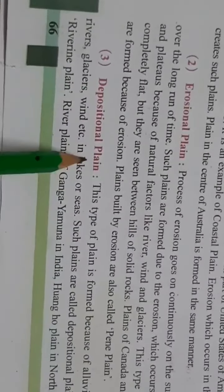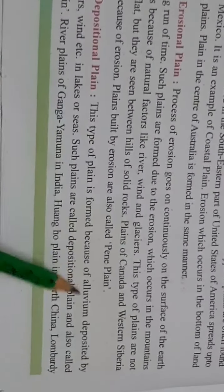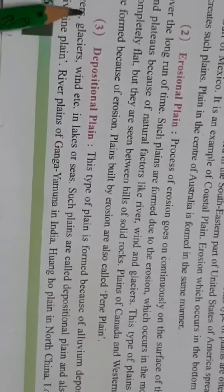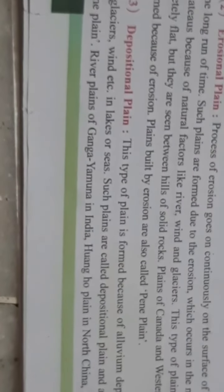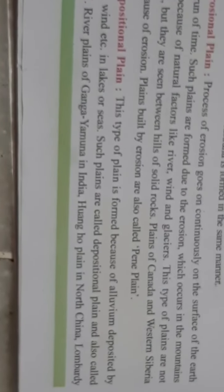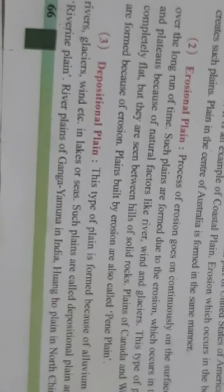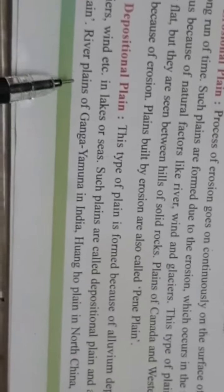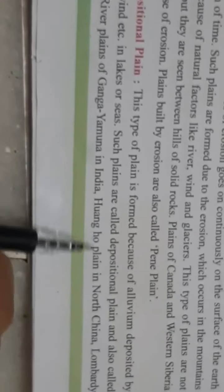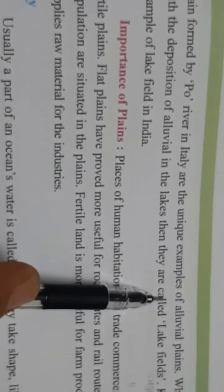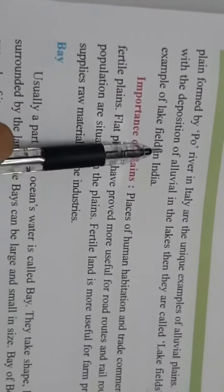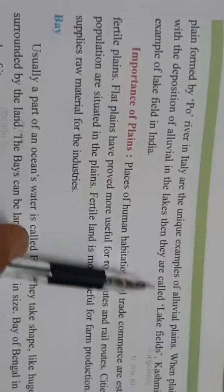Now third is depositional plane. This type of plane is formed because of alluvium deposited by rivers, glaciers, wind, etc. In lakes or seas, such planes are called depositional plane and also called riverine plane. River planes of Ganga and Yamuna in India, Huanghe plane in North China, Lombardy — the plane formed by the Po river in Italy — are the unique examples of alluvial planes. When planes are formed with the deposition of alluvial in the lakes, then they are called lake fields.